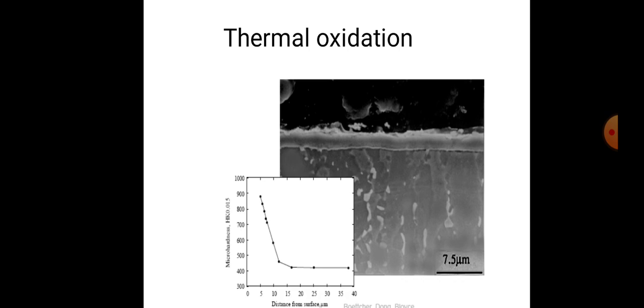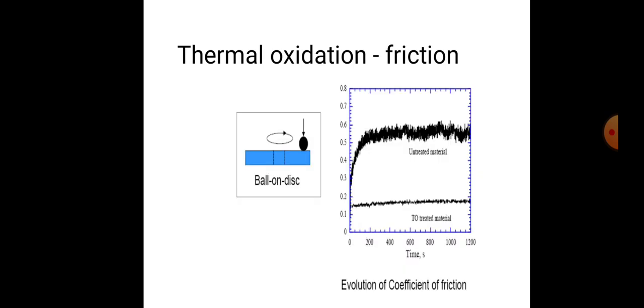The micro hardness values range from 300 to 1000, while the distance from the surface is measured in micrometers: 0, 5, 10, 15, 20, 25, 30, 35, and 40. These are the ranges for micro hardness versus surface distance under thermal oxidation.